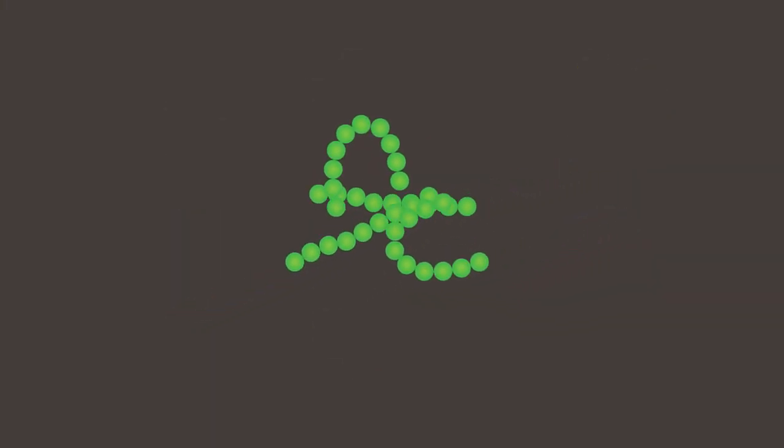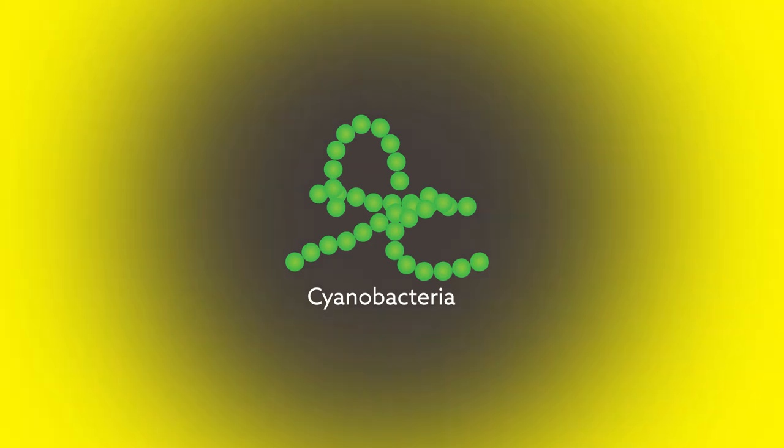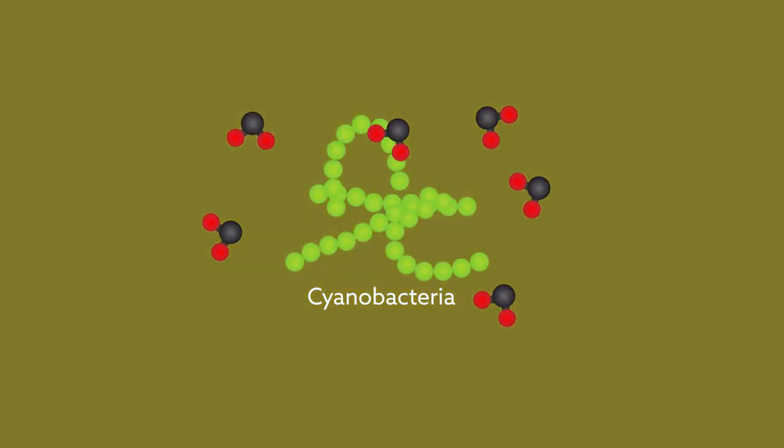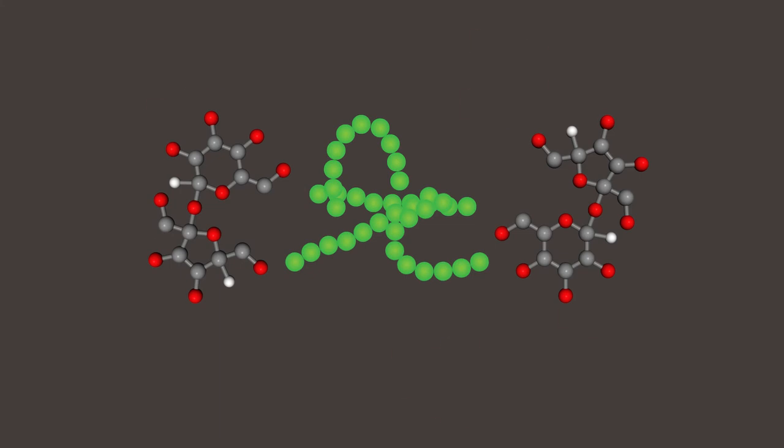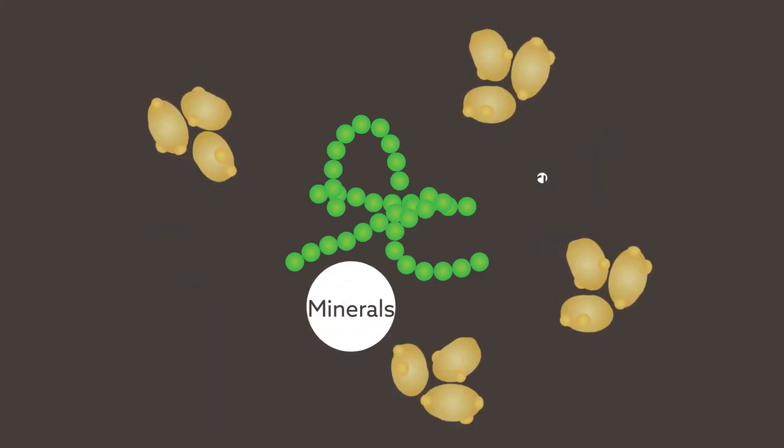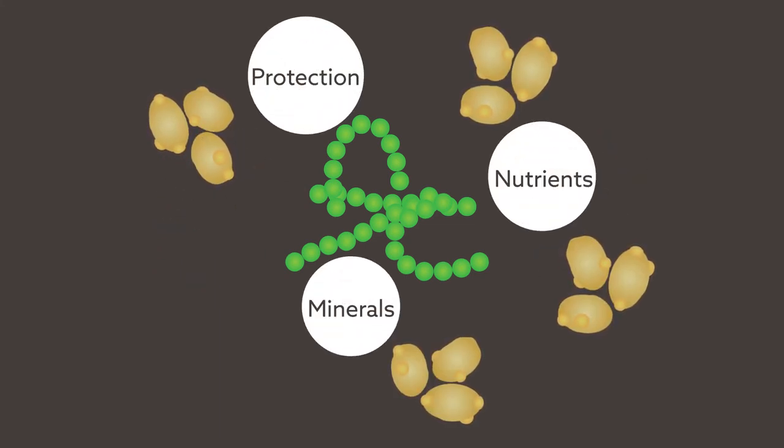These photosynthetic bacteria, called cyanobacteria, collect sunlight and carbon dioxide from the environment and convert it into a sugary meal. In turn, the fungus supplies minerals, nutrients, and protection from harsh environments.